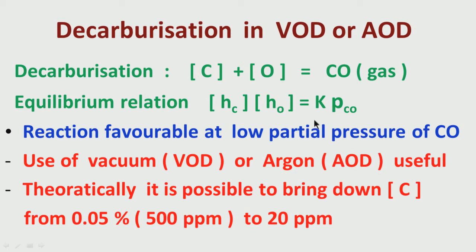Oxygen is of course necessary because it will react with carbon and carbon monoxide will be generated. So at a particular level of oxygen in the liquid steel, if the partial pressure of carbon monoxide is brought down, the amount of carbon in liquid steel can be lowered — that is the technique of decarburization. It is possible either using vacuum, in the process of VOD — vacuum oxygen decarburization — or using argon, which is argon oxygen decarburization. Either way, you can bring down the carbon level in liquid steel.